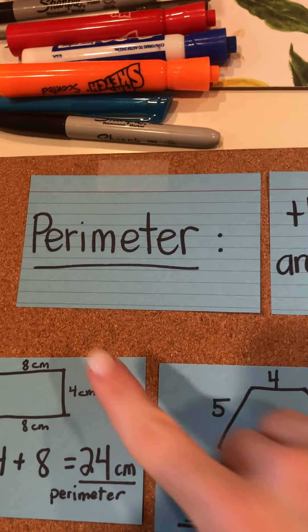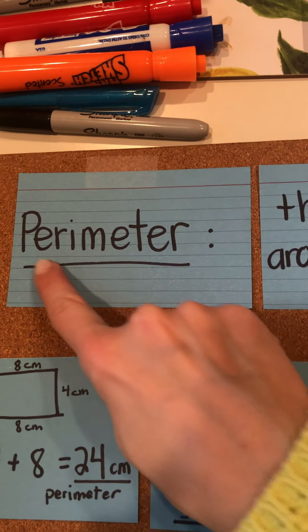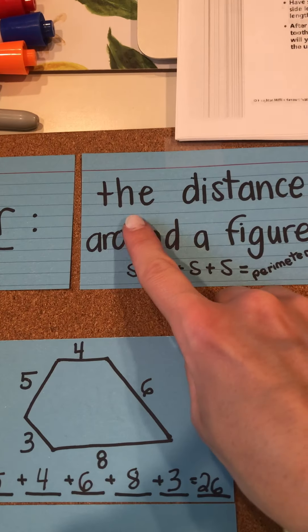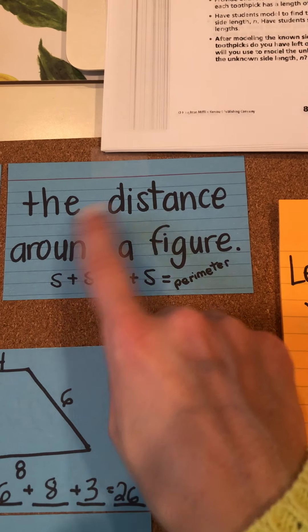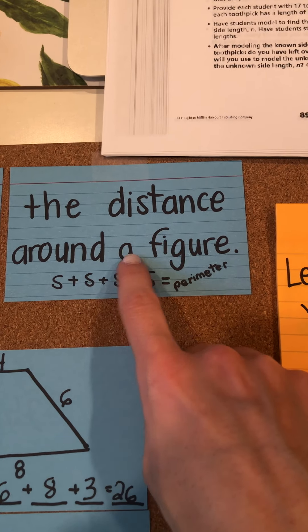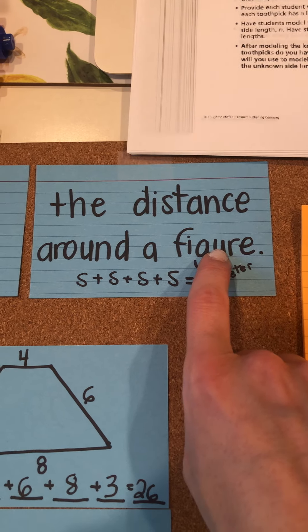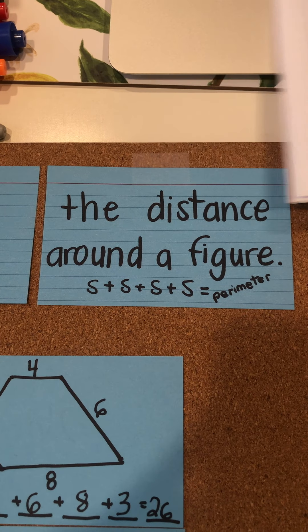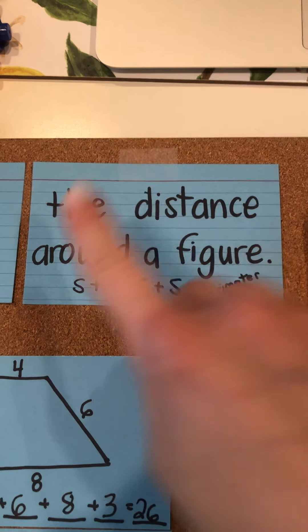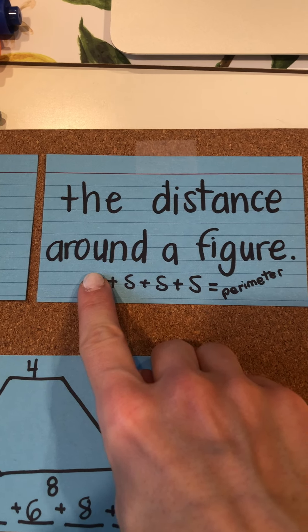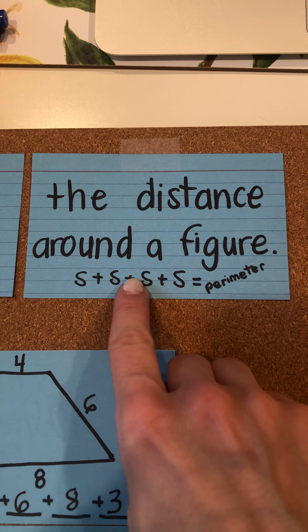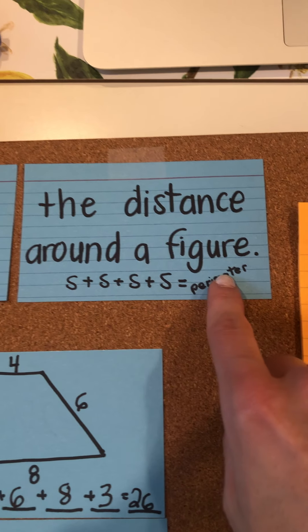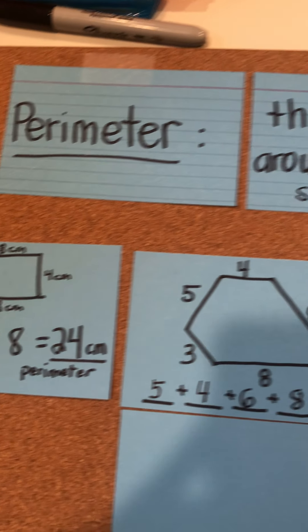So far in chapter 11, we've learned that perimeter is the distance around a figure. And to find the distance around a figure, we have to add side plus side plus side plus side. And that will give us the perimeter.